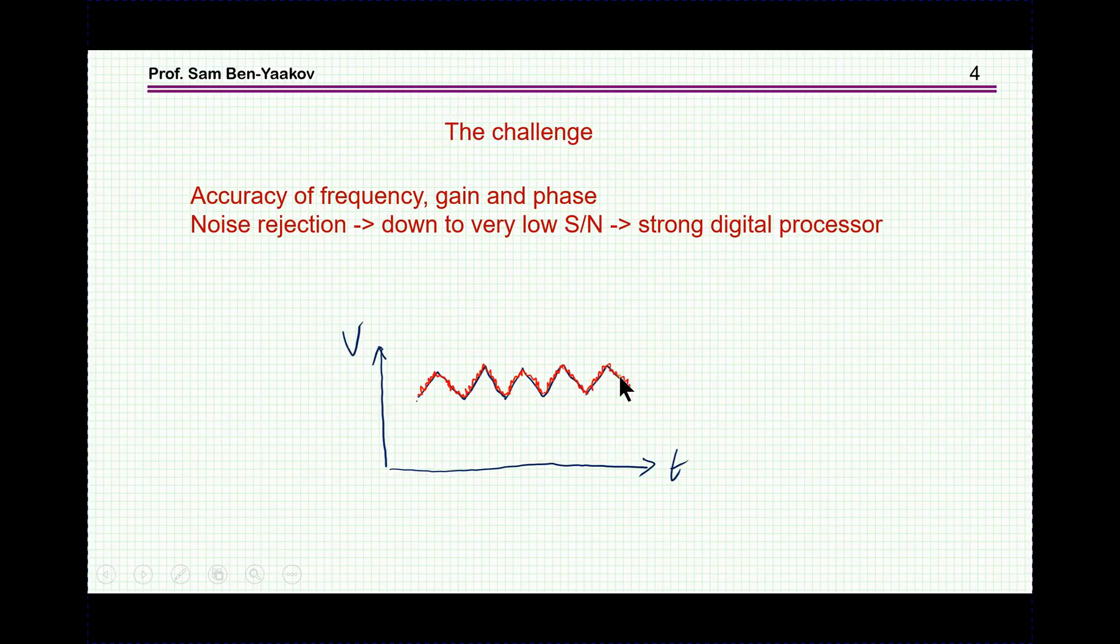So typically you might look at something like this, that is, this is the ripple at the output of the converter, and here is the remnant of this injection by the analyzer, and this is actually the challenge of the analyzer: to extract this signal from this disturbance and to get correctly the magnitude and phase. So aside from, of course, you'd like the frequency, gain, and phase to be accurate, obviously, more important is the ability of the system to combat this signal-to-noise ratio, which is very poor in power electronic systems. And the analyzer should be able to get the information in the presence of these high interference signals.